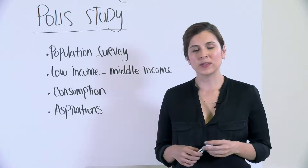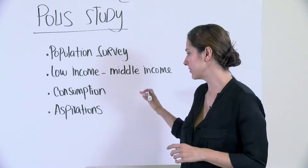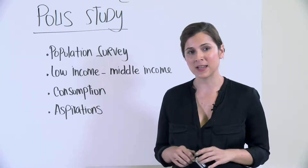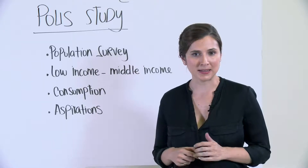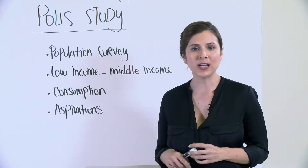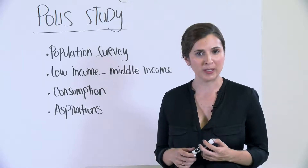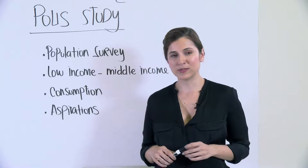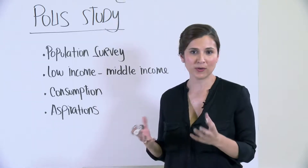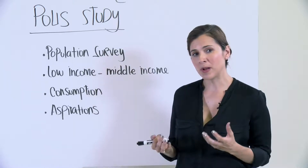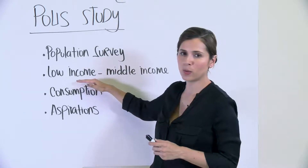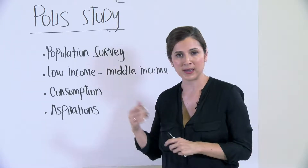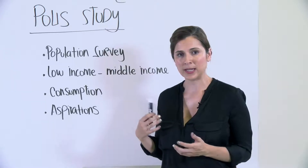With the objective to understand the expansion, aspirations, and consumption of the middle class in Cali, the Observatory of Public Policy Polis of Universidad Icesi conducted a study in the city. Cali is the third largest city in Colombia with a population of 2.4 million inhabitants. The Polis study was conducted through a population survey on the socio-economic compositions of the city, comparing the low-income population and the middle-income population based on the classification explained earlier.